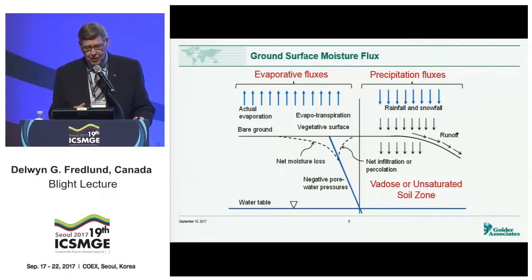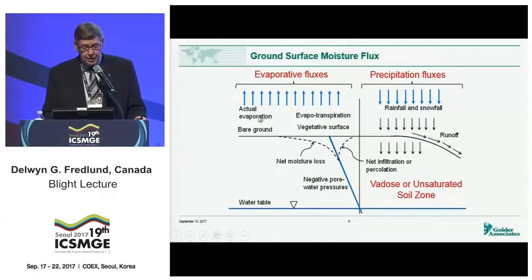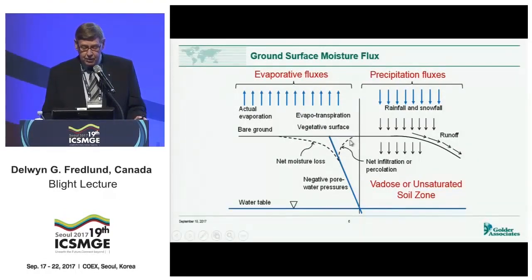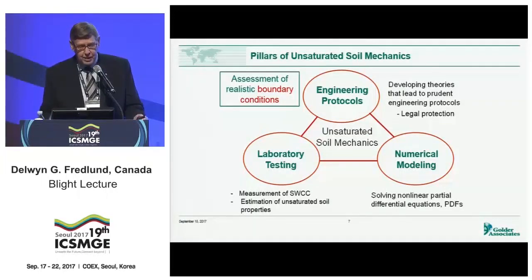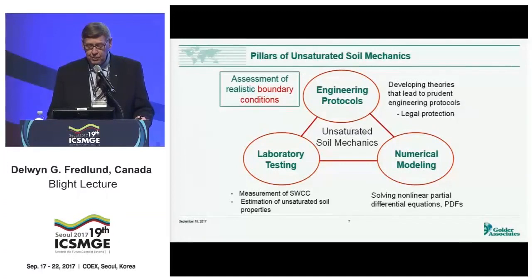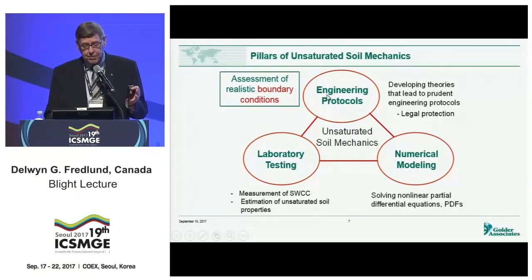The world is not quite as simple, because the ground surface always has a moisture flux. If water is going up in evaporation or evapotranspiration, the equilibrium line is drawn to the left and the water pressures become more and more negative. When it rains, it comes back to the right and the water pressures become smaller. So we have a trumpet shape up here that defines the changes in the stress state, because our problem is driven by climate. What are the pillars we need to put unsaturated soil mechanics into engineering practice? Those conferences help us develop theories, and those theories should lead to proper, prudent engineering protocols.